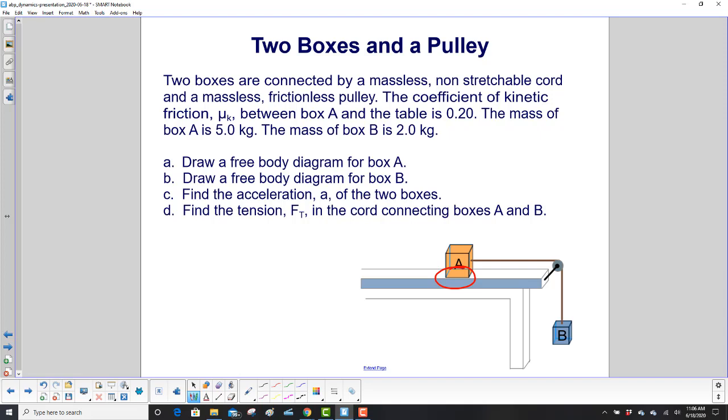Draw a free body diagram for box A, then B, then find the acceleration of the two boxes, and finally find the tension in the cord connecting boxes A and B.